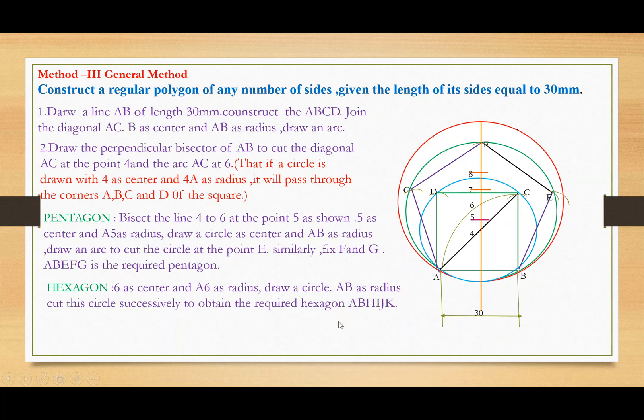Divide the circle into the number of equal parts - here 6 equal parts. Join to define the arc, and we get hexagon ABHIJK. Similarly, for heptagon, octagon, and so on. Thank you.